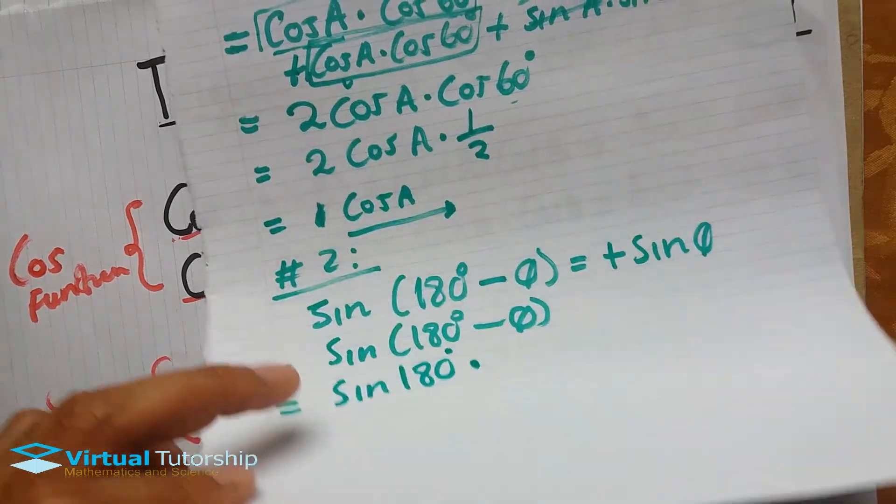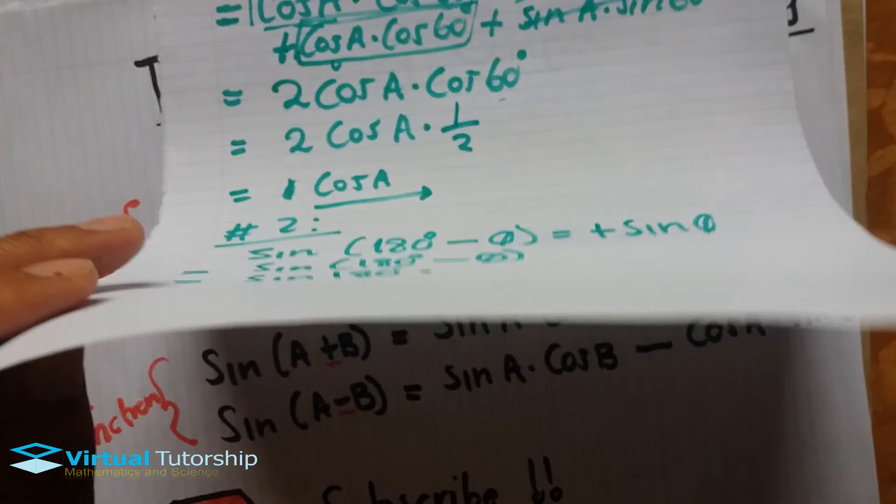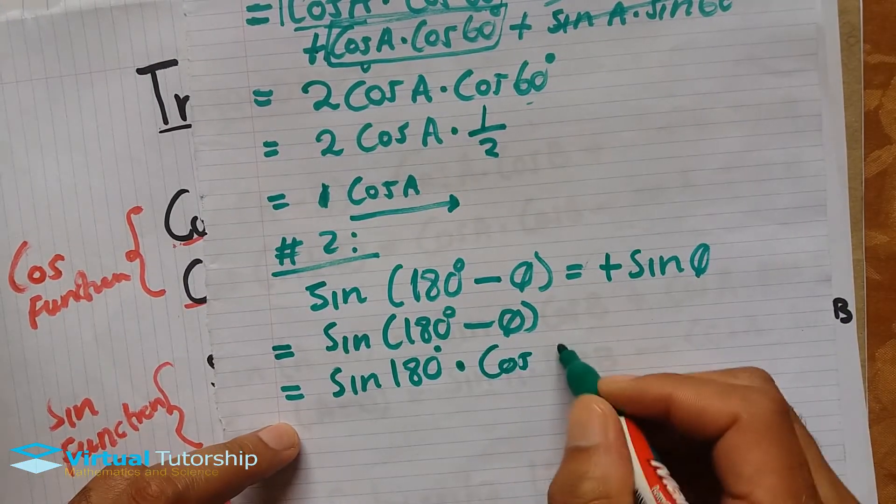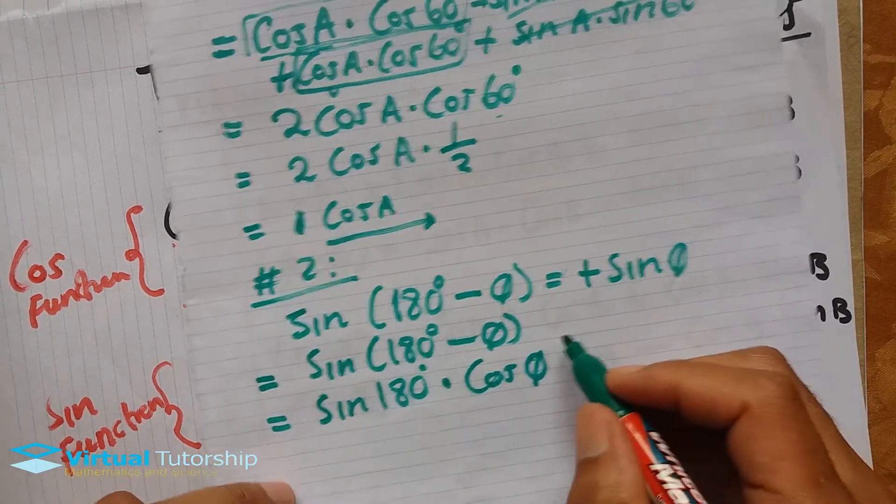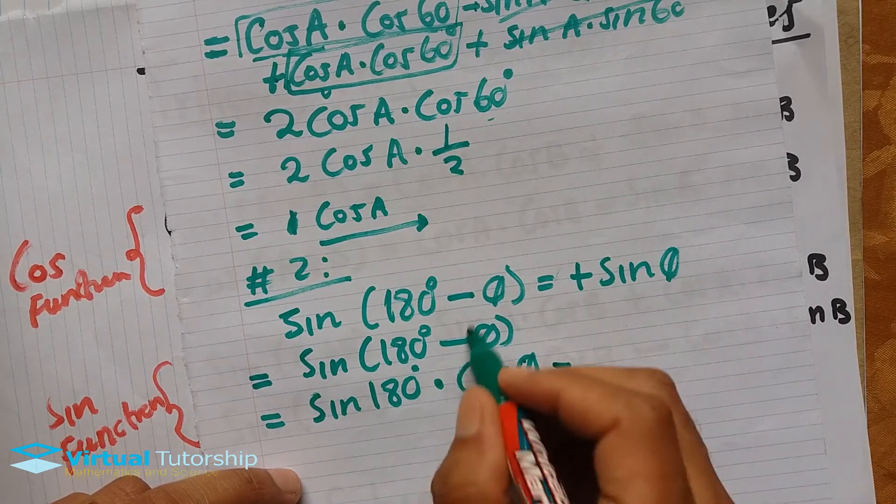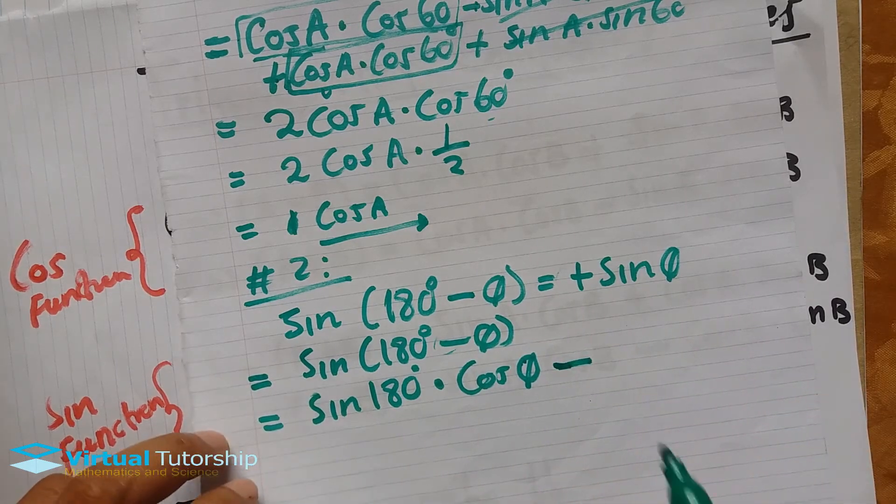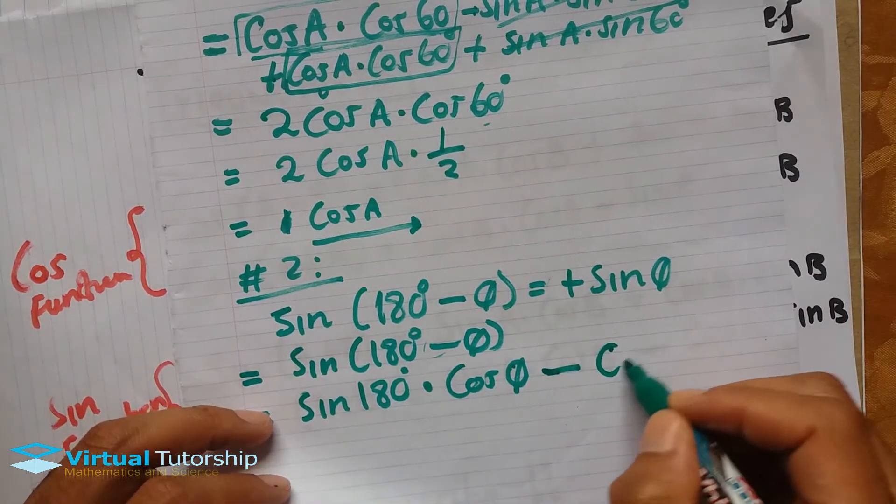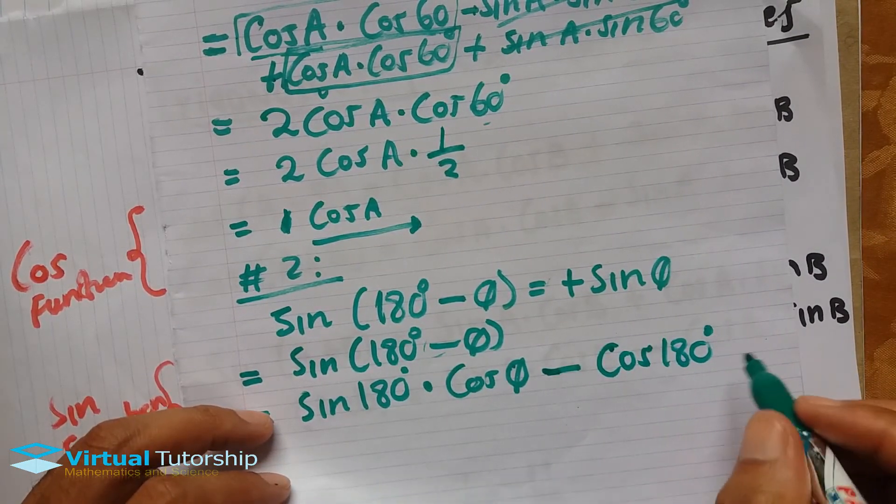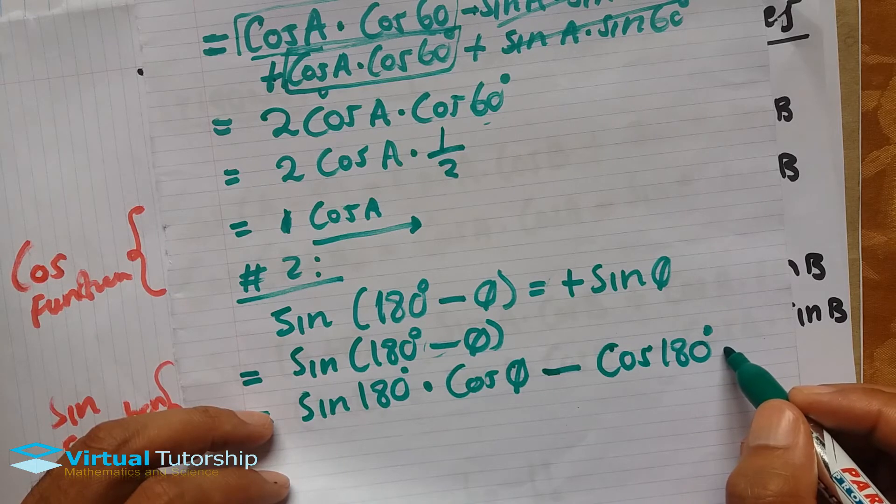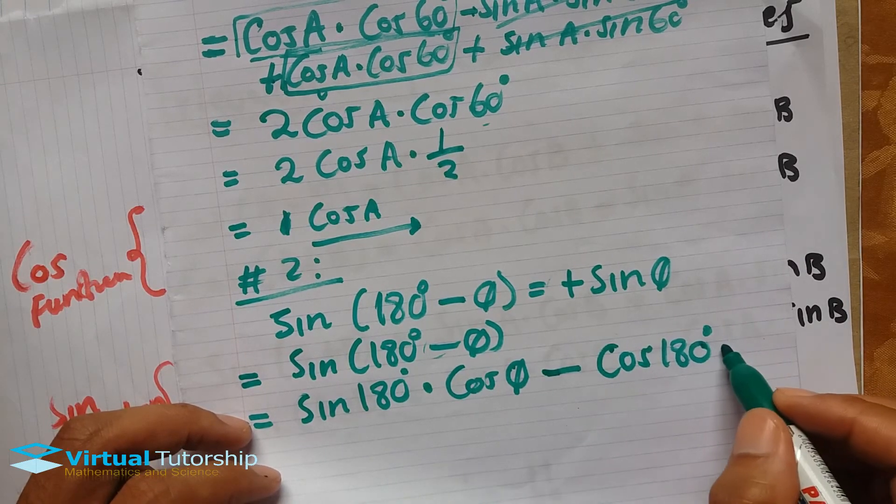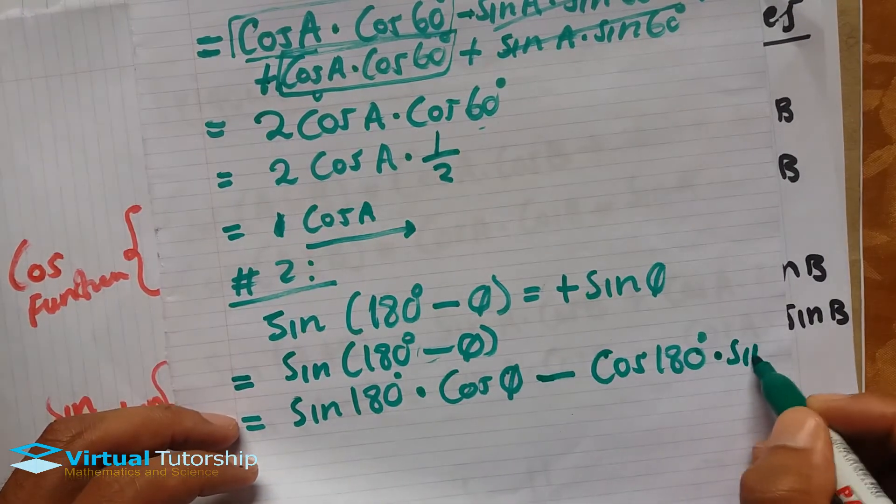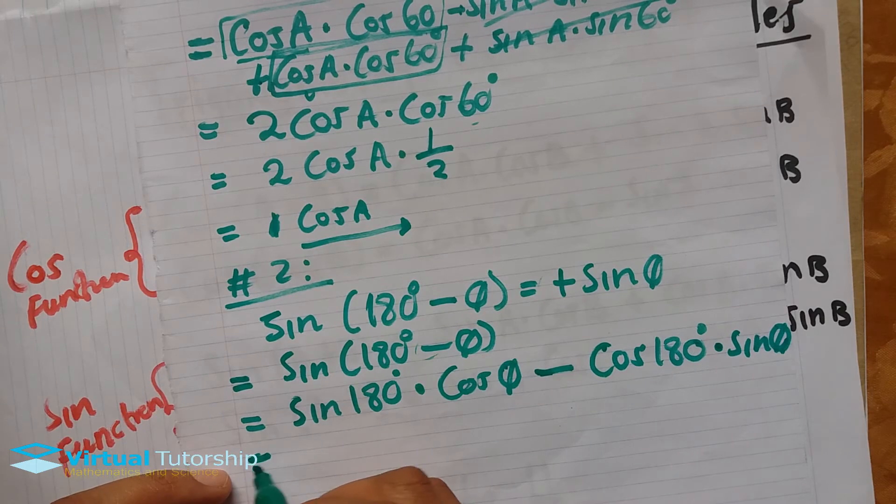When you expand this using the compound angle formula, you get sin(180°)·cos(θ). In this case the sign changes, so we get cos(180°)·sin(θ).